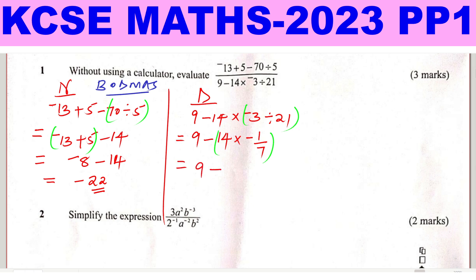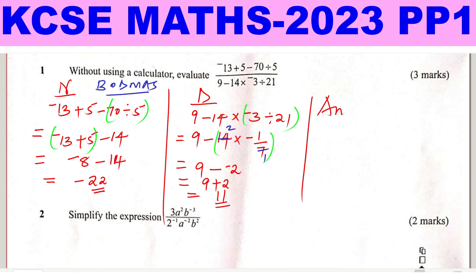Now we have subtraction and multiplication. Multiplication should come first. We multiply 14 times negative 1 over 7 — 14 divided by 7 gives 2, so this gives negative 2. Then 9 subtract negative 2 becomes 9 plus 2, which gives 11.